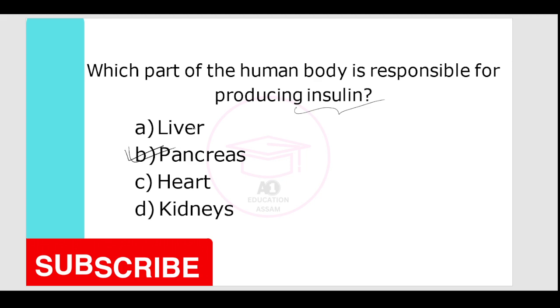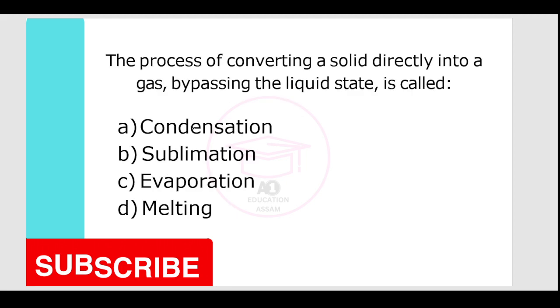The process of converting a solid directly into a gas, bypassing the liquid state, is called? Options are condensation, sublimation, evaporation, melting. Your correct answer is option B, sublimation.